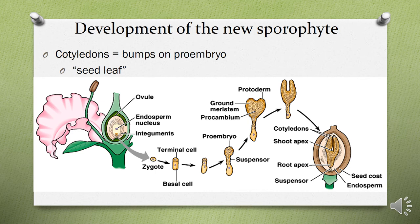Now let's discuss the development of the new sporophyte, also known as the life cycle of an angiosperm. After fertilization and zygote formation, the zygote divides into two cells: a terminal cell and a basal cell. The basal cell remains the same while the terminal cell undergoes multiple divisions and is converted into a suspensor and a pro-embryo. The pro-embryo further divides into ground meristem, pro-cambium, and protoderm.